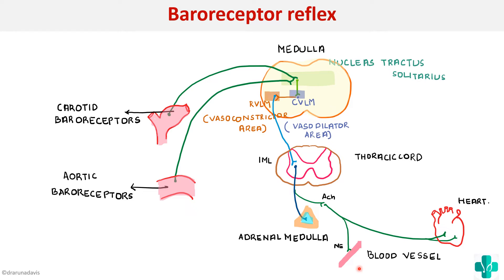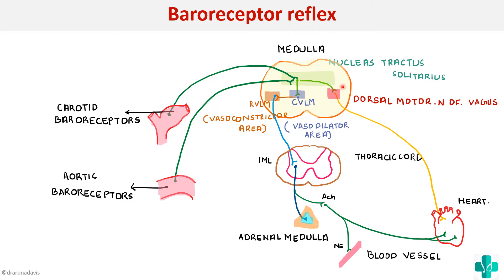This is one part of the reflex. The next part is that the nucleus of tractus solitarius also stimulates the dorsal motor nucleus of vagus. The vagus nerve is generally inhibitory to the heart — it decreases heart rate and brings about relaxation. Due to the combined effect of these two actions, the overall BP is reduced. The NTS stimulates both the CVLM (vasodilator area) and the vagal nuclei including the dorsal motor nucleus of vagus and nucleus ambiguus, decreasing cardiac function.